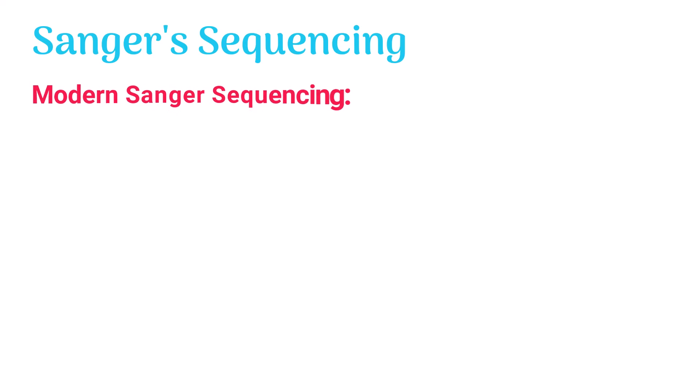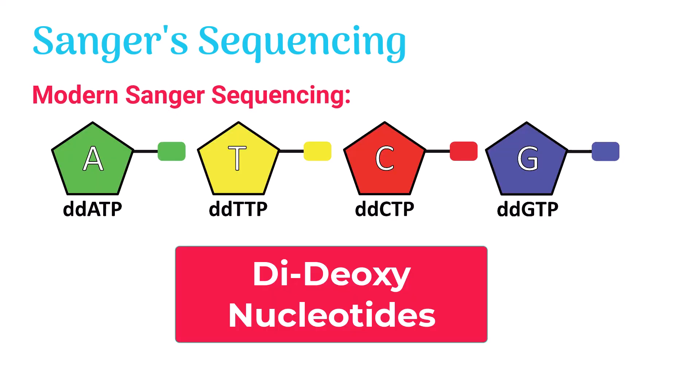In modern Sanger sequencing, each dideoxy nucleotide is labeled with a fluorescence dye. The dye can be of different colors like red, green, and yellow.